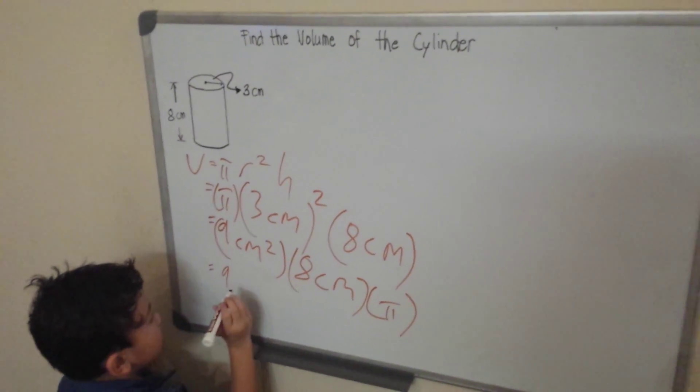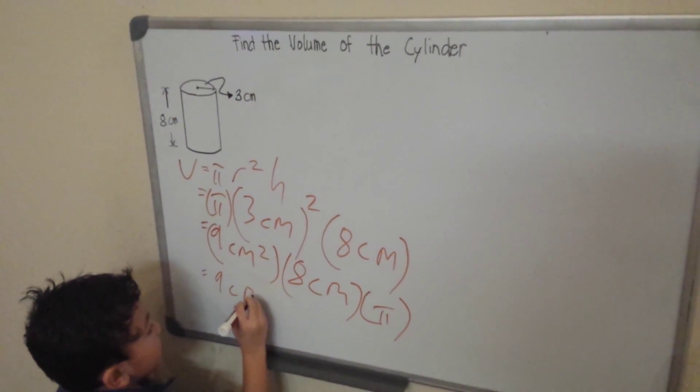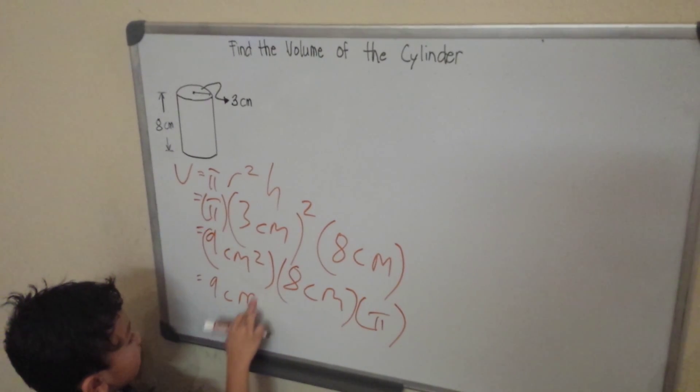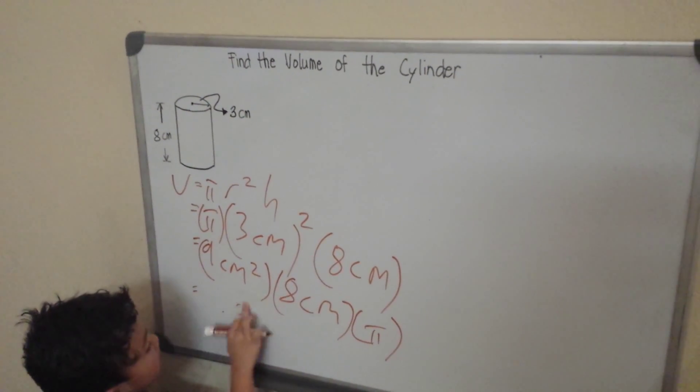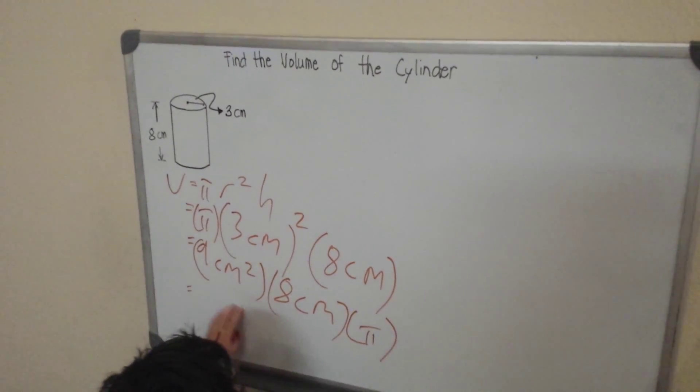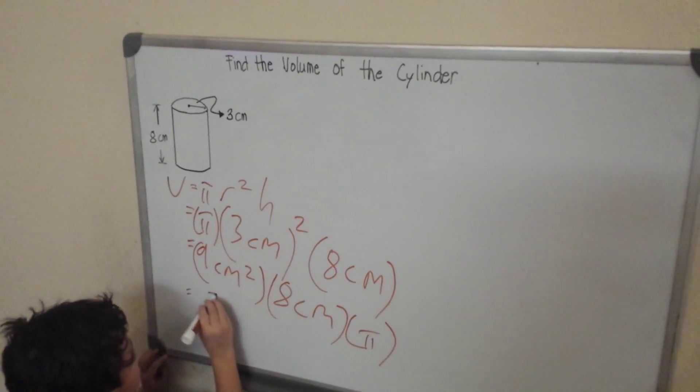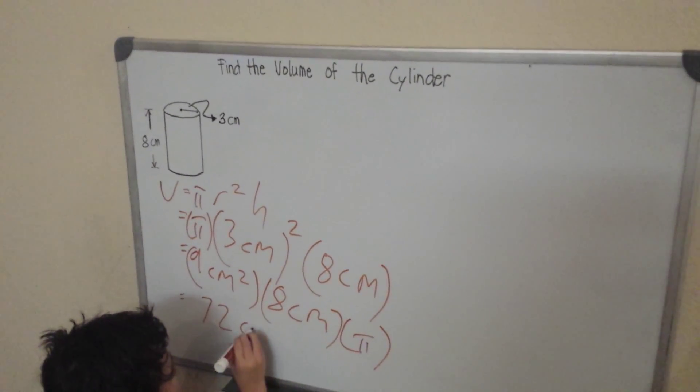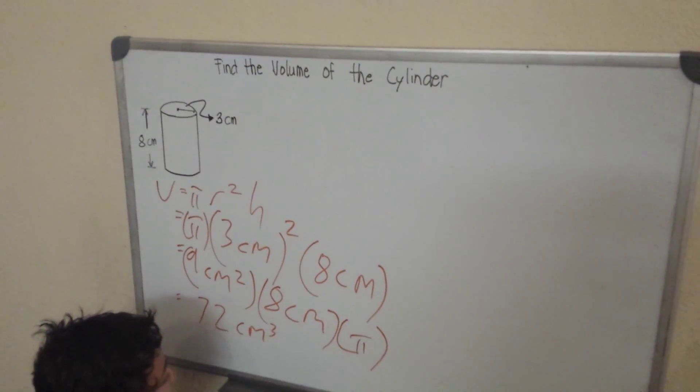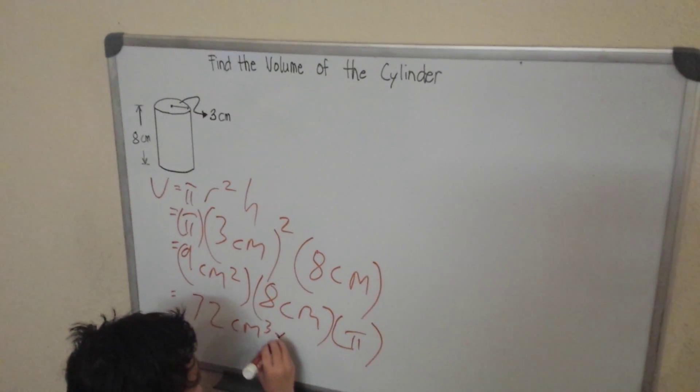So what we have here, we get 9, we need to multiply 9, 9 times 8, which is 72. That's this cube, and then our pi.